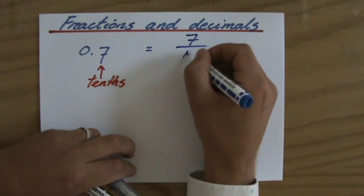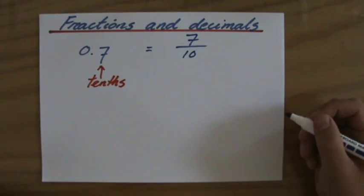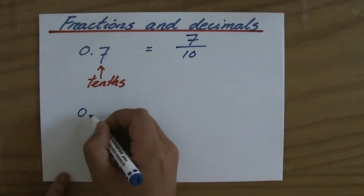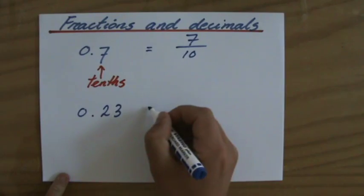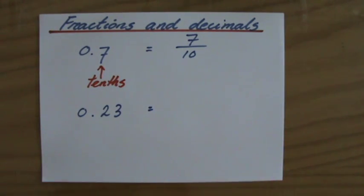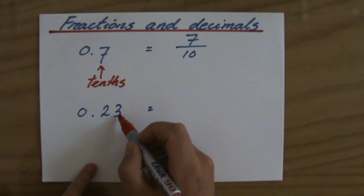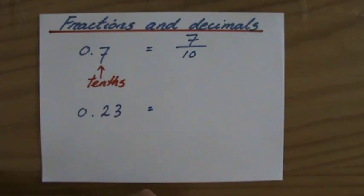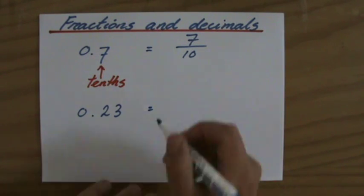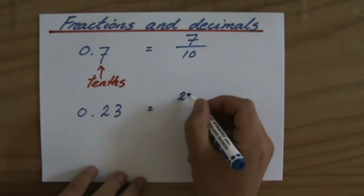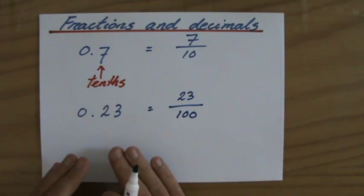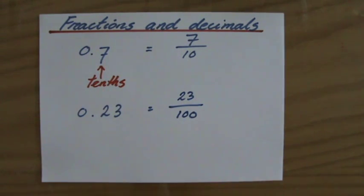Now if I would have a different decimal, for instance 0.23, again what is the place value? Well, those are my tens and those are my hundreds. Now how many hundreds in this case do I have? I have 23 hundreds, so 0.23 as a fraction is 23 over a hundred.